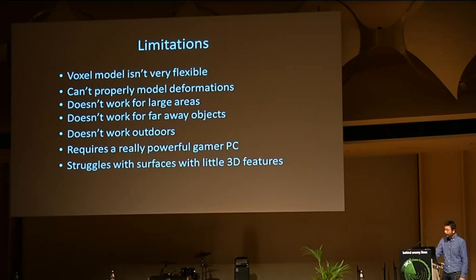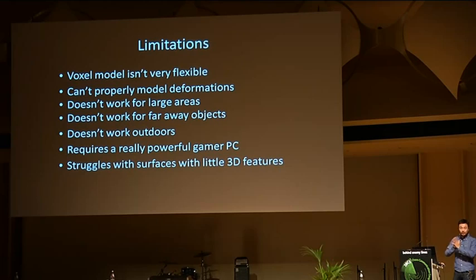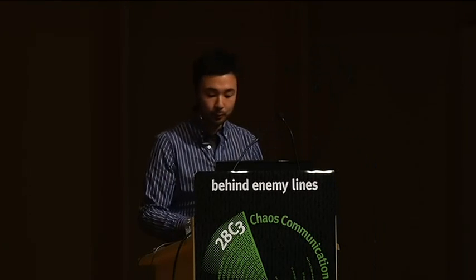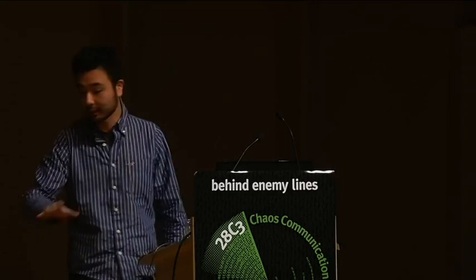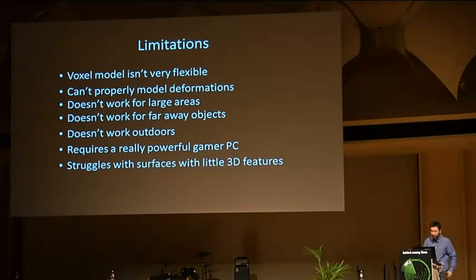Another limitation is that Kinect struggles with surfaces that have few 3D features. When I point the Kinect at a wall or the floor, the tracking algorithm doesn't know how to align the current frame to the previous frame, and camera tracking really doesn't work. That's why I set up a 3D-rich scene to create enough 3D features to make it work.